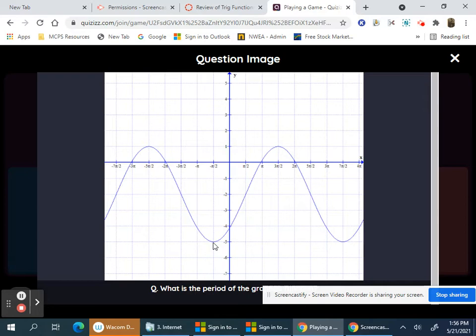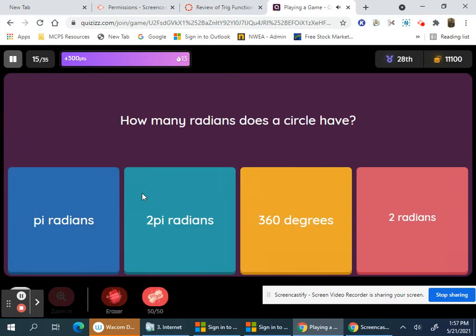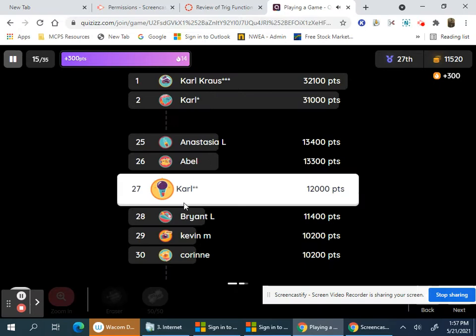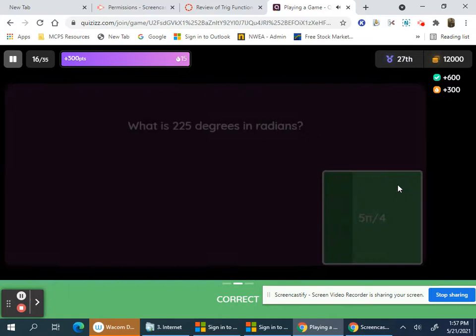What's the period of the graph function? You're going from negative pi over 2 to 7 pi over 2, which is 8 pi over 2. That's 4 pi. How many radians does this circle have? 2 pi radians. 225 degrees in radians is 225 pi over 180, and then simplify by dividing by 45, which is 5 pi over 4.